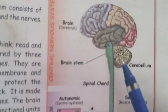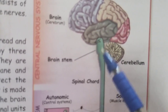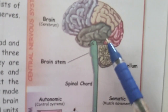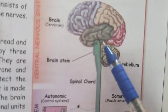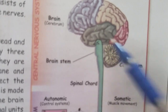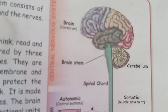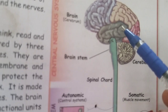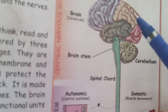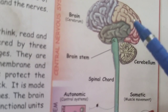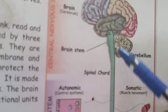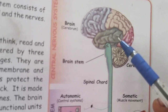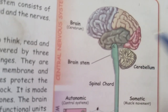Students, now look at this picture. What is this? This is a brain. The brain is one of the internal organs because it is located inside the body. It controls all the functions of our body. It is the main organ of the nervous system.